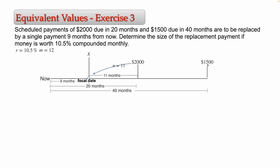For the $1,500, we also need to compute its value at the focal date. The $1,500 is due at 14 months from now, and the focal date is at nine months, so the time between the focal date and the scheduled date is 14 minus 9 equals 5 months — though the speaker states 31 months. Since compounding is monthly, n equals 31 for the $1,500, and we again use a negative exponent because we're moving backward in time.